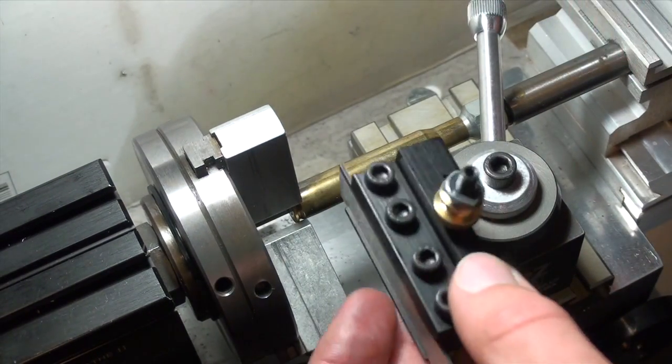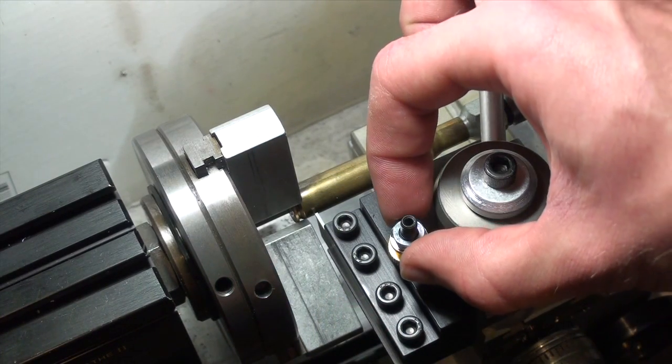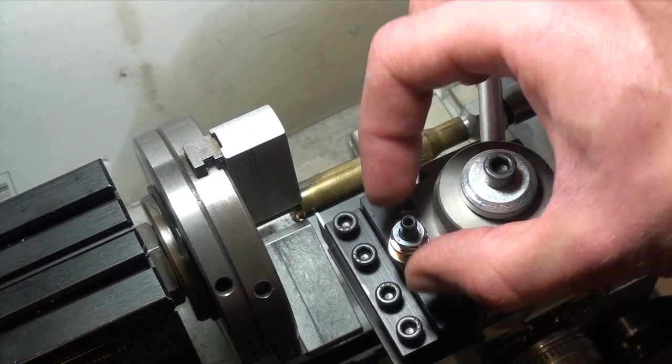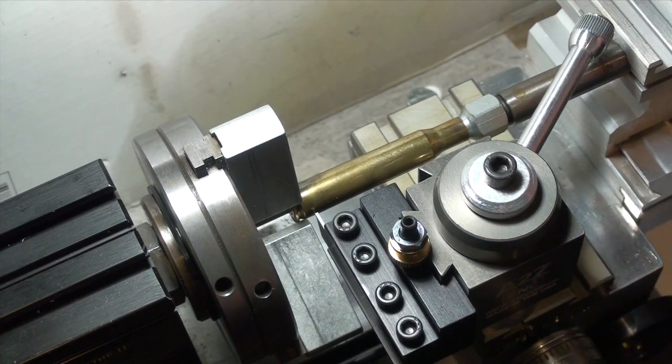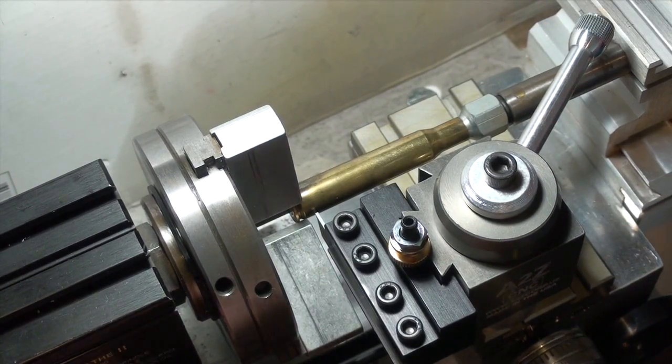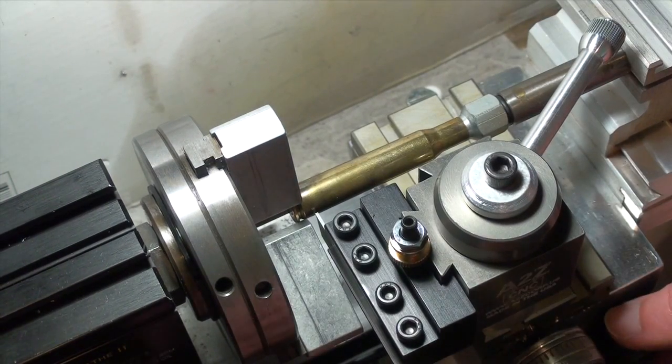So we're going to put our parting tool in the quick change tool post. Now is the time to make sure your tool height is set. You can lock it in and put the cross slide stop on just so I'm not going to hit the chuck when it starts spinning. So let's see how it does.